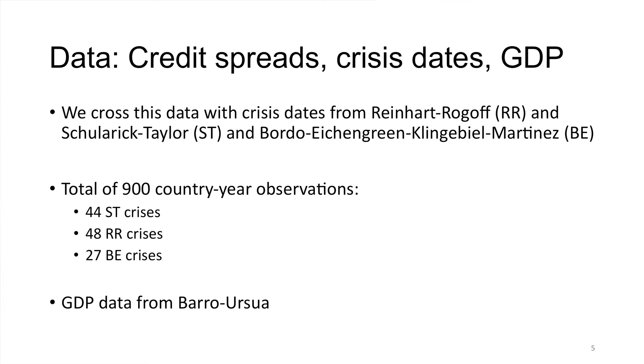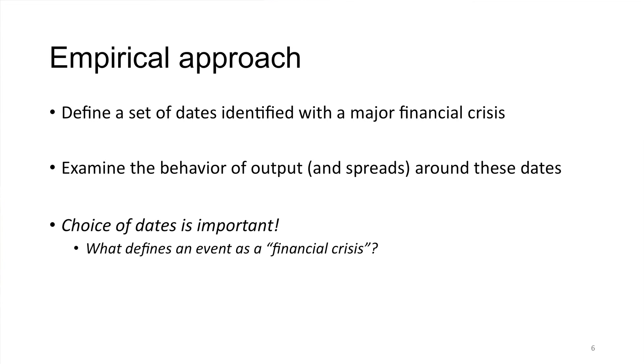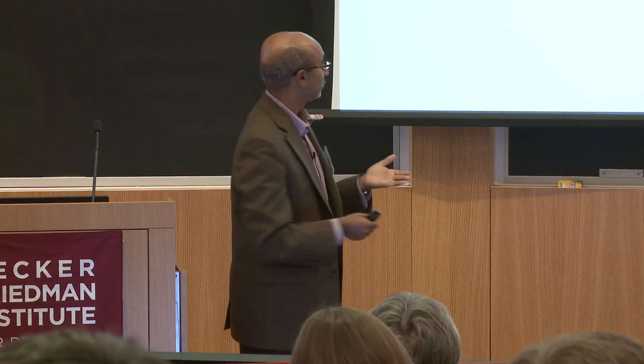The empirical approach is as follows. We're interested in asking how GDP behaves around a financial crisis. We pick a set of events called financial crises and examine GDP around these events, then compare how GDP is behaving around those events to how GDP is behaving around another set of events — for example, a recession or non-crisis. It's going to be critical to define these events properly. The choice of dates is centrally important because it will drive all of your conclusions.